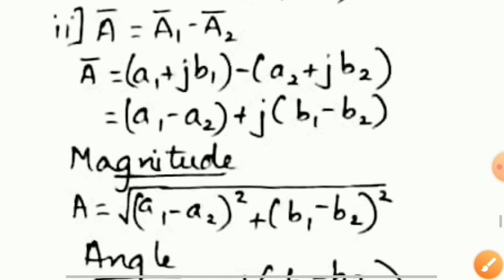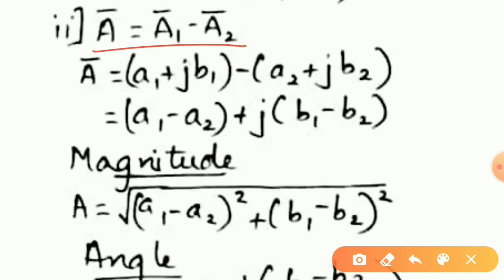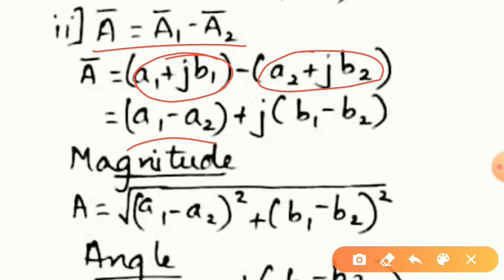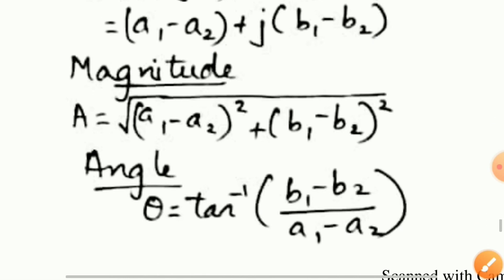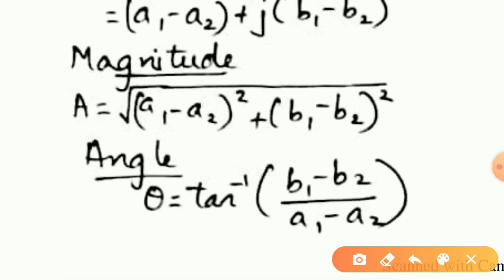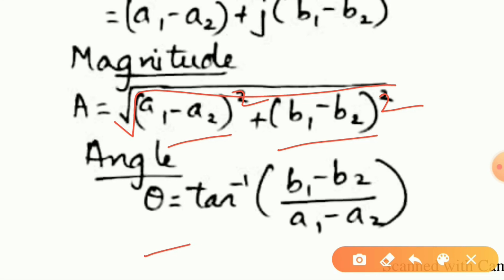Subtraction of phasors is obtained as a equals a1 minus a2, where a1 is a1 plus Jb1 and a2 is a2 plus Jb2. On separating real and imaginary terms, we get (a1 minus a2) plus J(b1 minus b2). The magnitude is root over (real part squared plus imaginary part squared), and the angle is theta equals tan inverse of imaginary part upon real part.